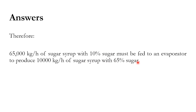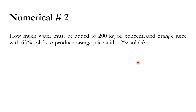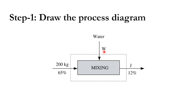Moving on to numerical number two: how much water must be added to 200 kg of concentrated orange juice with 65% solids to produce orange juice with 12% solids? We have to calculate the value of water w to be added to a feed of 200 kg at 65% concentration. This is a mixing system — the feed is 200 kg at 65%, water w is added, and the final product j is at 12% solids concentration.